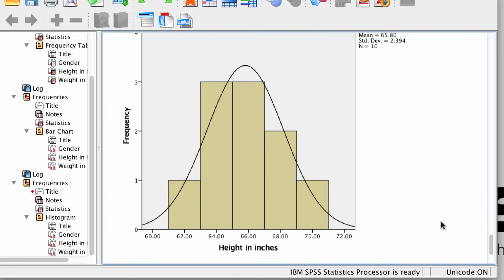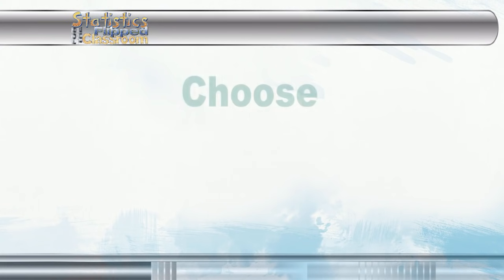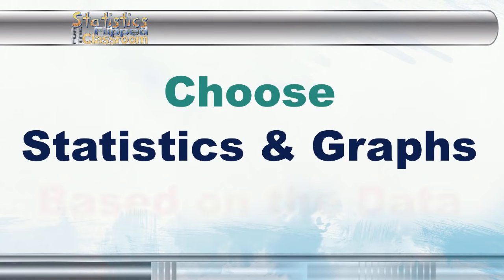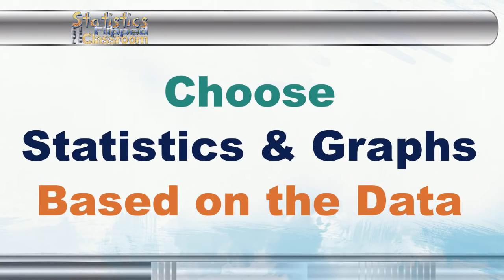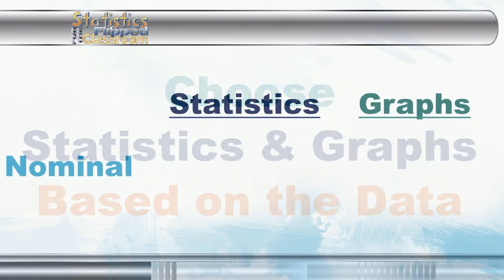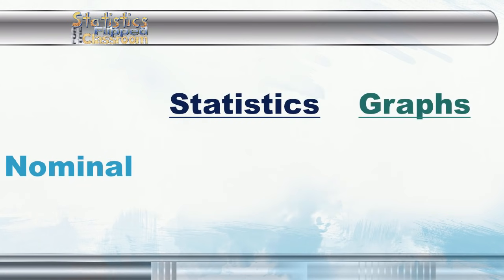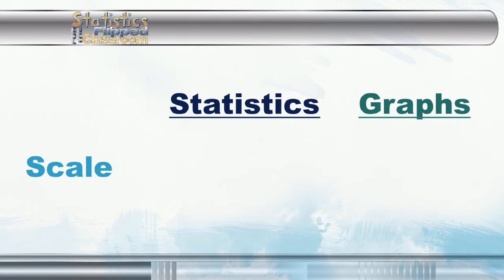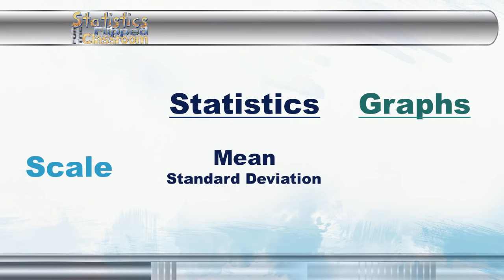The important thing to learn here is that you should choose the statistics and the graphs that are appropriate to your data. A nominal variable like gender should be reported with frequencies and a bar chart. Scale variables like height should be reported with a mean, standard deviation, and a histogram.